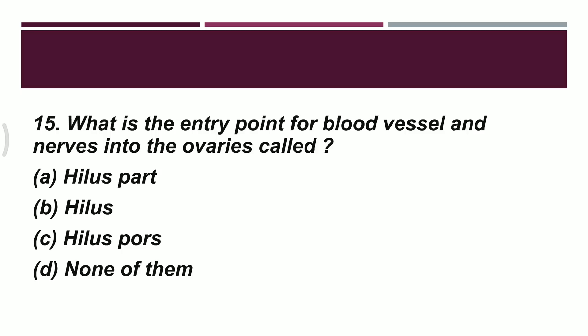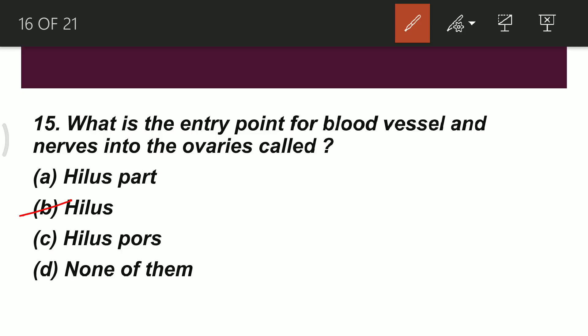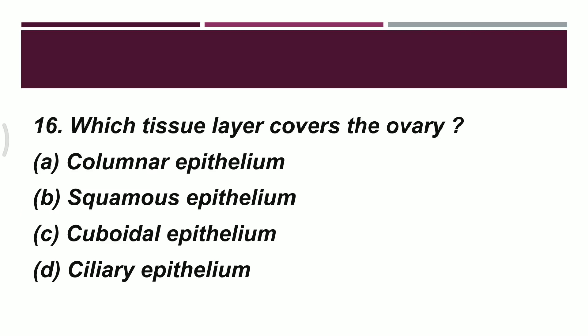Question 15: what is the entry point for blood vessels and nerves into the ovaries called? Option A: hilius part. Option B: hilius. Option C: hilius pores. Option D: none of them. The correct option is B — hilius — which is the entry point where blood vessels and nerves enter into the ovaries.